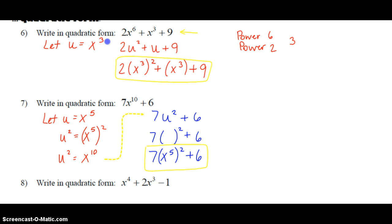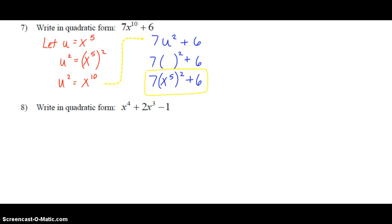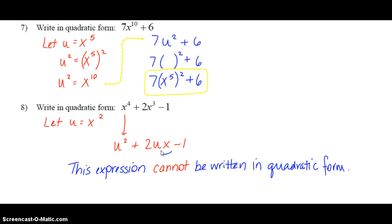This is a strategy you're going to use on example number eight also. This time we want to write it in quadratic form. We're going to say that u is equal to x squared, because our power is to the fourth. So this would be rewritten as u squared plus 2u — but we have an x left over because we have x cubed. So rewriting in terms of u, we still have an x left over: 2u x minus 1. The fact that we still have this x creates a problem, and this means the expression cannot be written in quadratic form, because we can't write it only in terms of u and then substitute back. You will be expected to recognize when you can and cannot write in quadratic form.